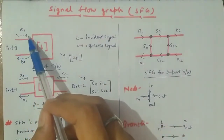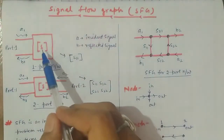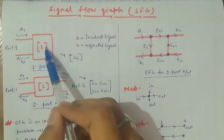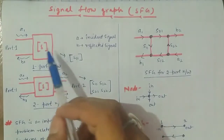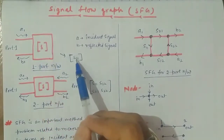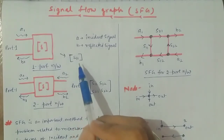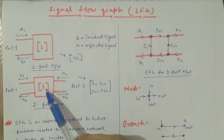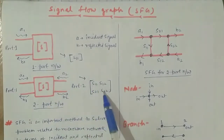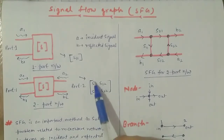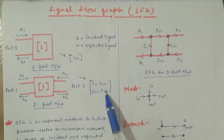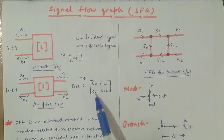So A1 is the incident signal and B1 is the reflected signal. S denotes the scattering matrix of the given network. When it is a one-port, there will be only one element, S11, also called the reflection coefficient. For a two-port network, we have four elements: S11, S12, S21, and S22 — reflection at port 1, reflection at port 2, and the two transmission coefficients.